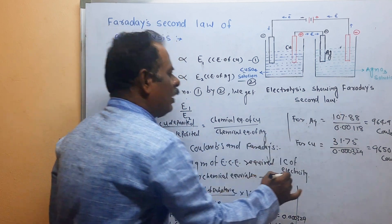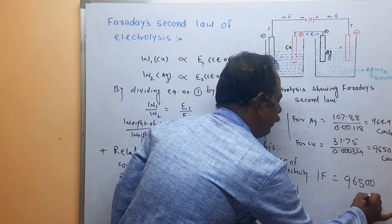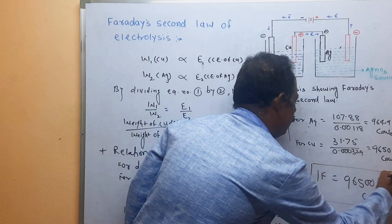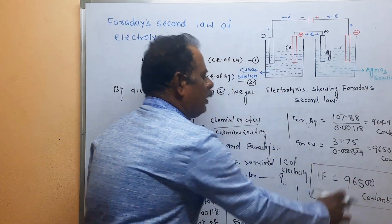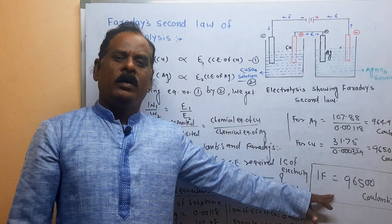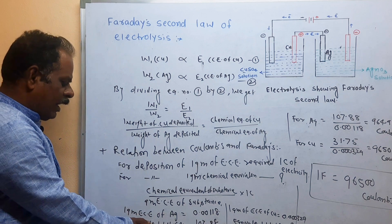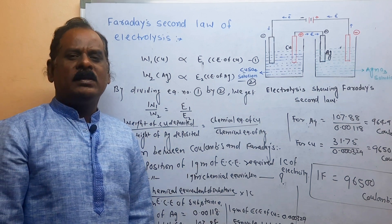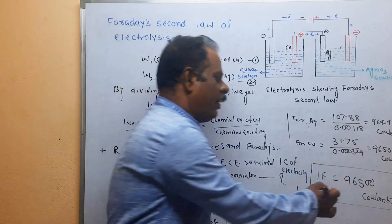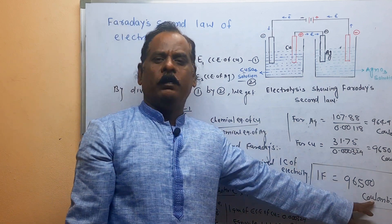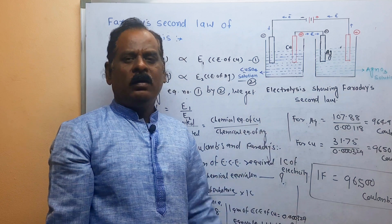From this equation we can conclude that 1 Faraday is equal to 96,500 Coulombs. How do we define 1 Faraday? The amount of electricity required to deposit 1 gram of equivalent weight of a substance is called 1 Faraday, which equals 96,500 Coulombs. This is the relation between Faraday and Coulomb. Questions that may be asked in the examination, as well as some important points, will be given in the description box. Thank you.